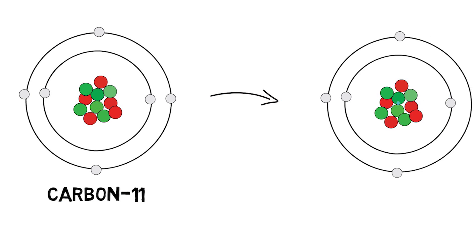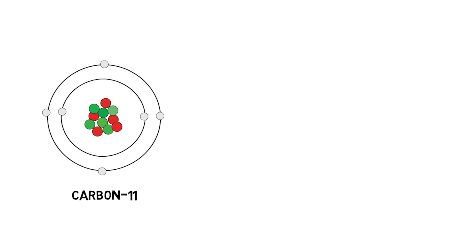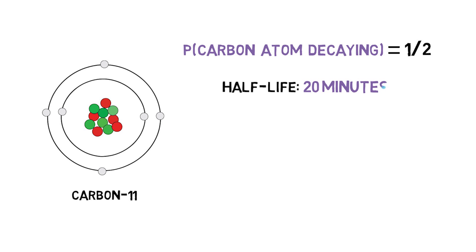Consider carbon-11, an isotope of carbon that decays into boron. Here's a fact about carbon-11. Roughly half of all carbon-11 atoms decay within any 20 minute period. What explains this fact? The standard scientific answer, the kind of answer that you would find in Carmen's textbooks, for instance, is that roughly half of all carbon-11 atoms decay within any 20 minute period because the probability of each carbon-11 atom decaying within each 20 minute period is one half.